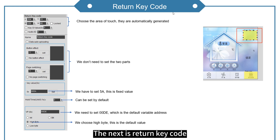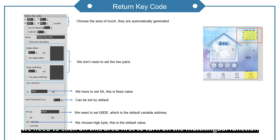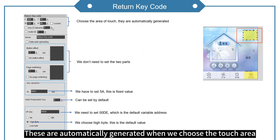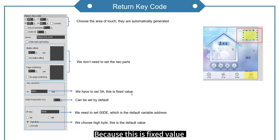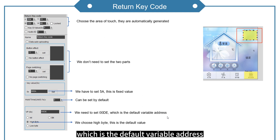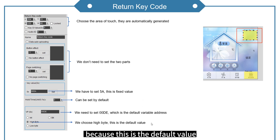The next function is return key code. This function is designed to enable multi-language switching. When we power on, we need to click on this area first to turn on the multilingual function. You could also set other areas. These are automatically generated when we choose the touch area. These can be set by default. For the key value, we have to set 5A, because this is a fixed value. This parameter can be set by default. We need to set 00DE, which is the default variable address. The last part, we choose high byte, because this is the default value.